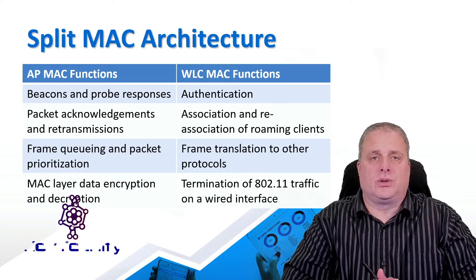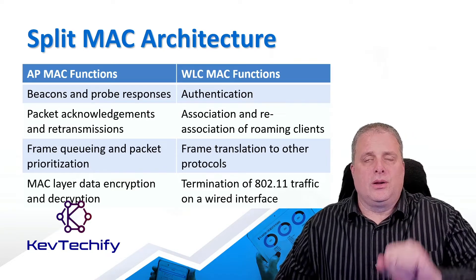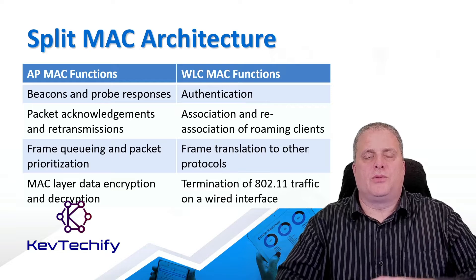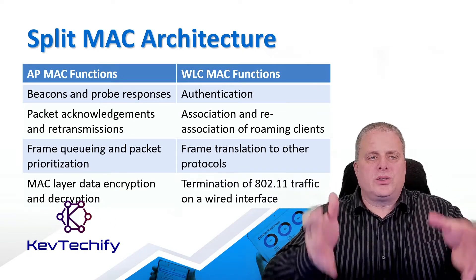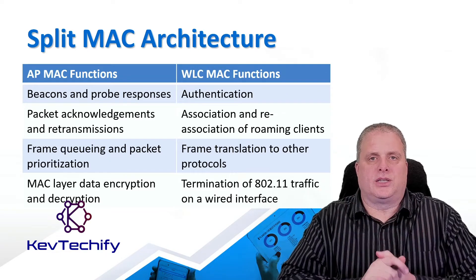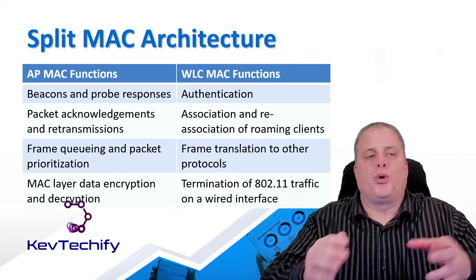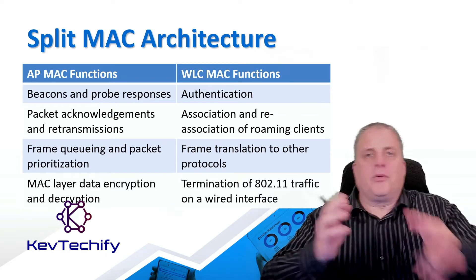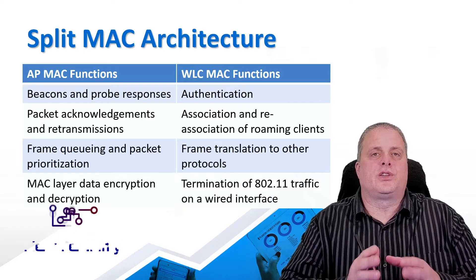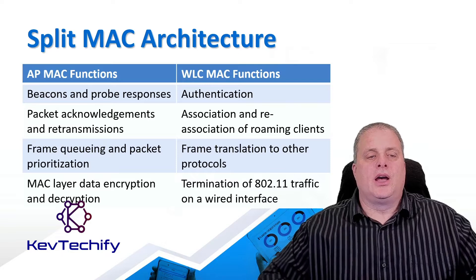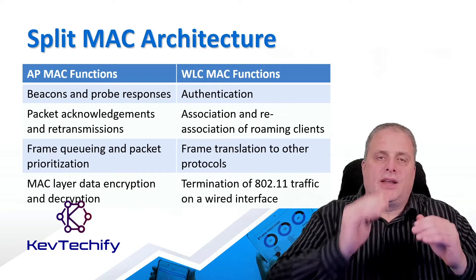CAPWAP splits the media access control by function — the access point gets some, and the wireless LAN controller gets some. The access point sends out beacons and probes, responds to clients wanting to know the SSID and authentication, handles packet acknowledgements and retransmissions, and manages the ready-to-send and clear-to-send process. It also queues up data when there's too much to send over wireless, handles quality of service, and manages layer 2 data encryption and decryption.